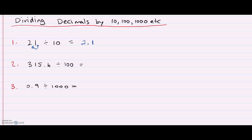For the second example, 315.6 divided by 100. This one's a little easier because I need to move my decimal point two spots because there's two zeros, to get my decimal point between the three and the one. So 315.6 divided by 100 is 3.156.